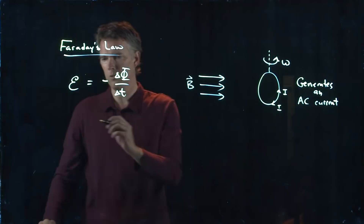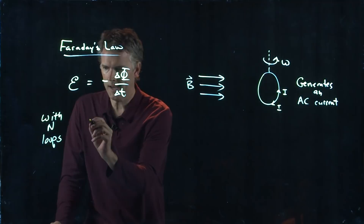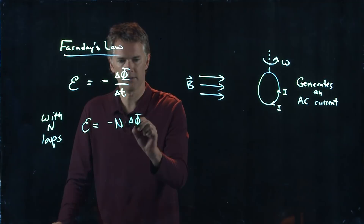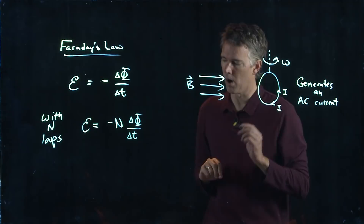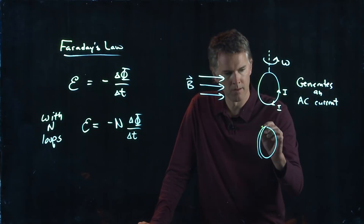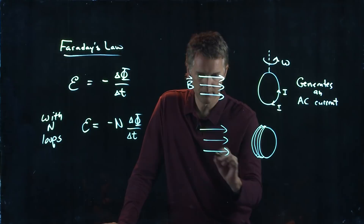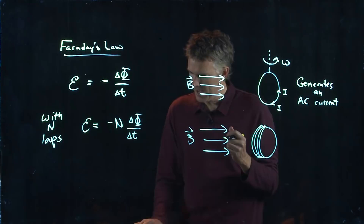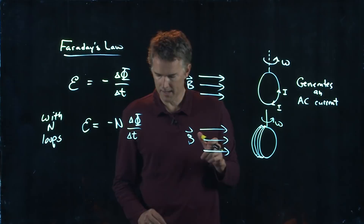If we use more than one loop — a whole bunch of coils — we just add up the EMF. We throw an N in there to get N times the EMF of just one coil. So with a whole stack of coils rotating in the B field, it generates an AC current sinusoidally because it's rotating at omega.